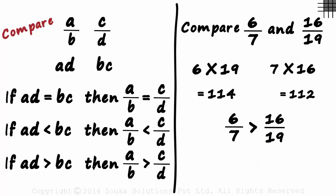If we use the calculator, you will see that 6 by 7 is approximately 0.8571 and 16 by 19 is around 0.8421. But is this always the best way?